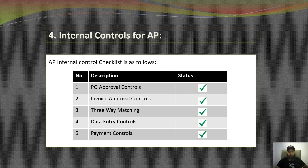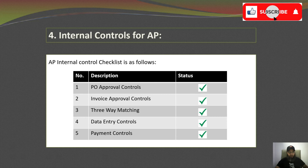In manual AP processes, duplicate payment searches are somewhere between difficult and impossible. AP automation performs duplicate payment searches very easily.